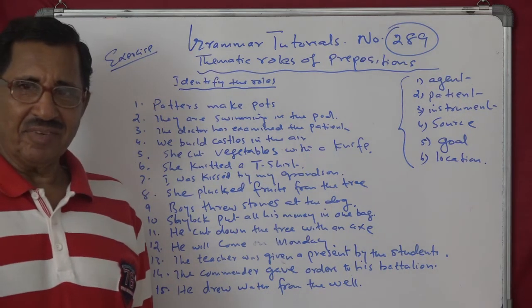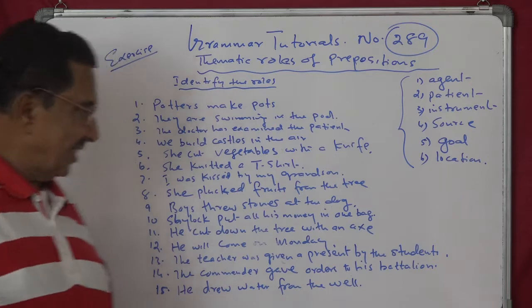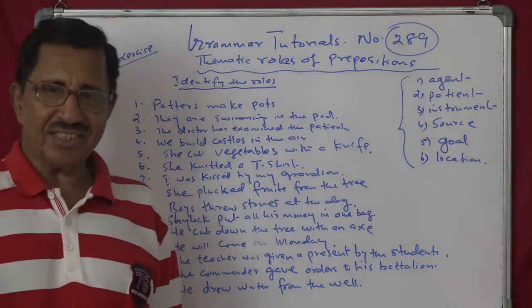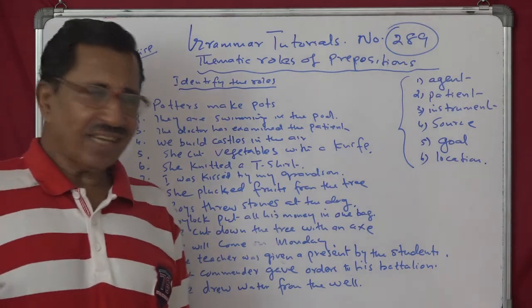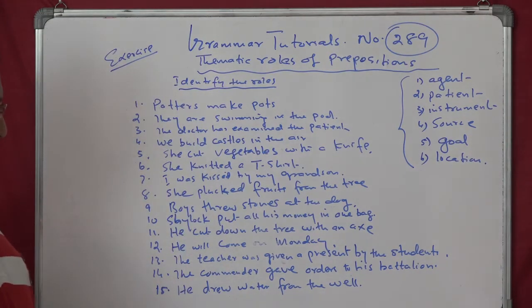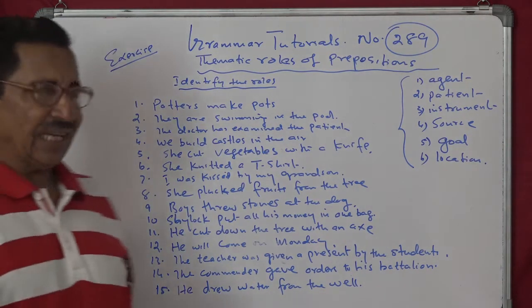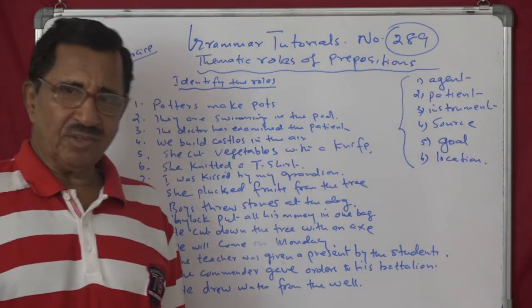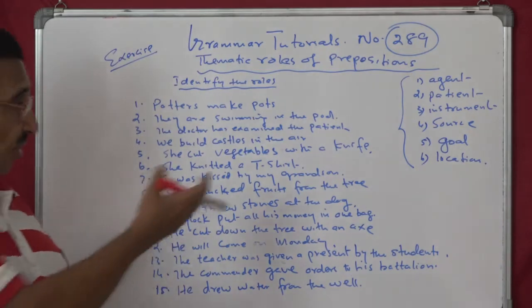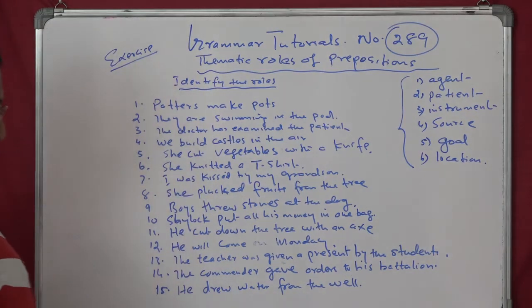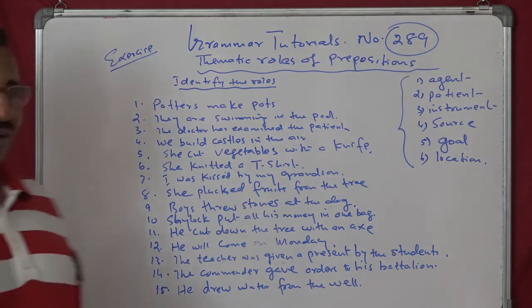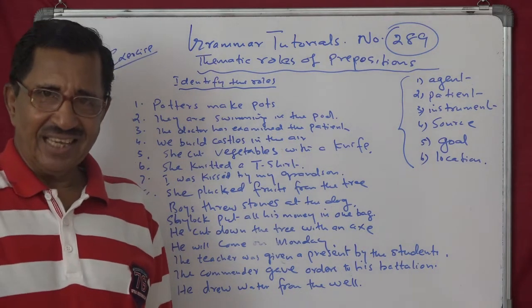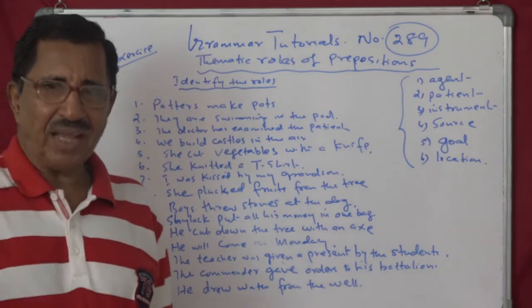Sixth: 'She needed a t-shirt' — patient, the t-shirt suffered. Seventh: 'I was kissed by my grandson' — agent, my grandson is the agent. Eighth: 'She plucked food from the tree' — source. The thematic role is source. Ninth: 'Boys threw stones at the dog' — patient, suffering the action, the recipient of the action.